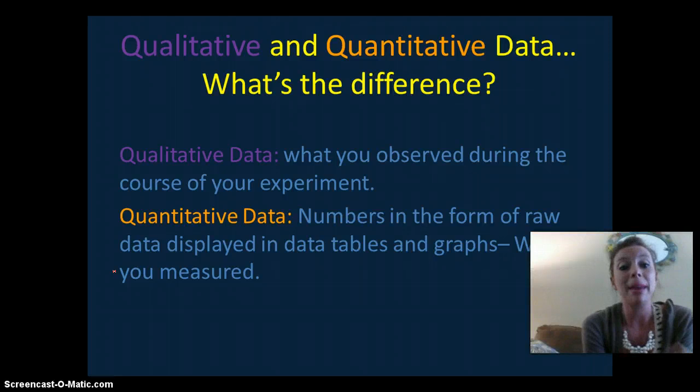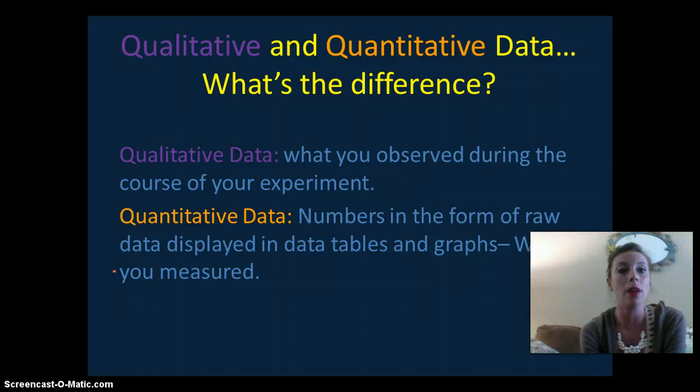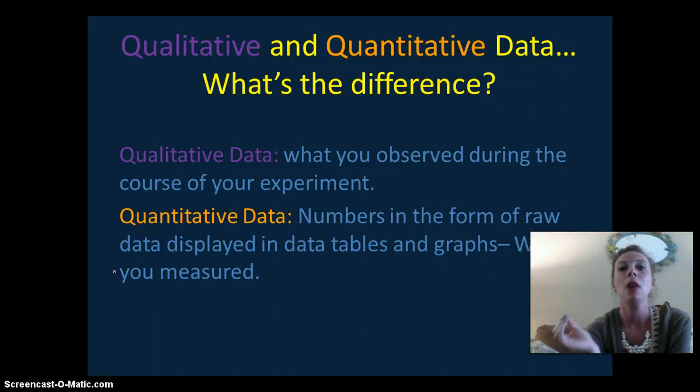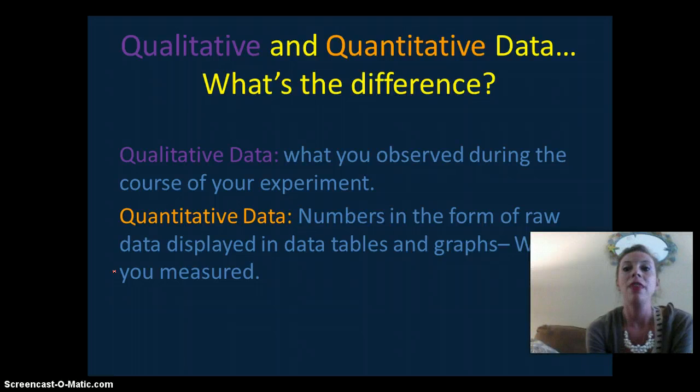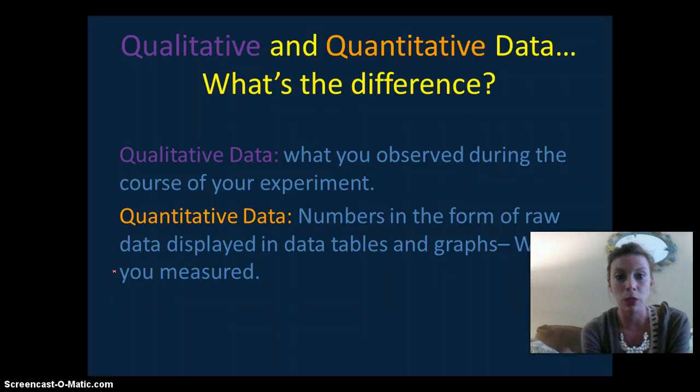So now we're going to talk about different types of data, qualitative and quantitative data. What's the difference? Well, qualitative data are going to be data that you observed during the experiment that is really quality. So, like color, it doesn't really have much to do with numbers. Quantitative data is going to be numbers in the form of raw data, and it's displayed in tables and graphs. It's what you measured in the experiment.